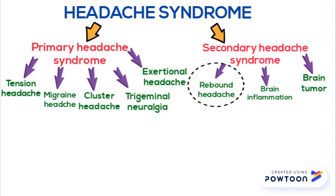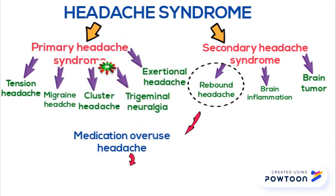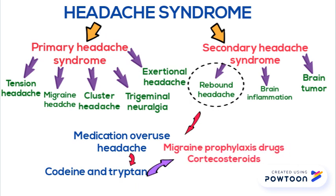Rebound Headache is also called Medication Overuse Headache. The most commonly overused medications are Codeine and Triptans, and its effect can be reversed by Migraine Prophylaxis Drugs and Corticosteroids.